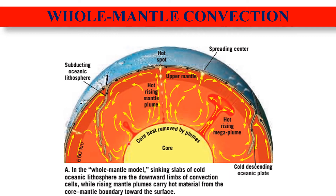The downward flow of subducting slabs is generally balanced by violently rising mantle plumes that transport hot mantle rock towards the surface. Two kinds of plumes have been proposed: narrow tube-like plumes and giant upwellings often referred to as mega plumes. The long narrow plumes are thought to originate from the core-mantle boundary and produce hot spot volcanism of the type associated with the Hawaiian Islands, Iceland, and Yellowstone. Associated with India, certain mantle plume activity includes the eruption of continental flood basalts and Deccan Traps.